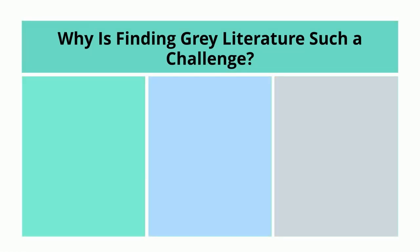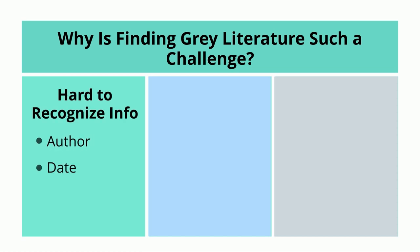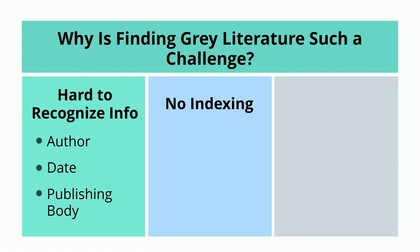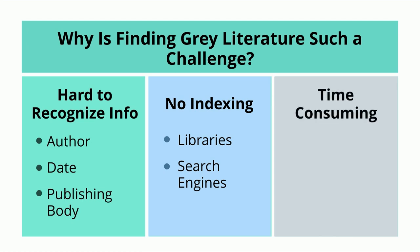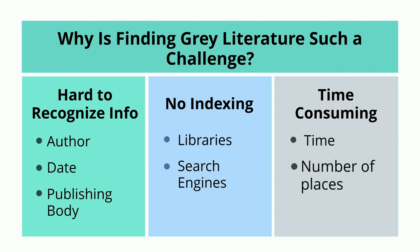Why is finding grey literature a challenge? Basic information such as author, publication date, or publishing body may not be easy to recognize. Also, grey literature is often not well indexed by any search tool. No library comprehensively collects and indexes grey literature, and web search engines often can't access the document repositories holding grey literature. Both of these factors mean that searching for grey literature can be frustrating, both in terms of the time it takes and the number of places you have to look.